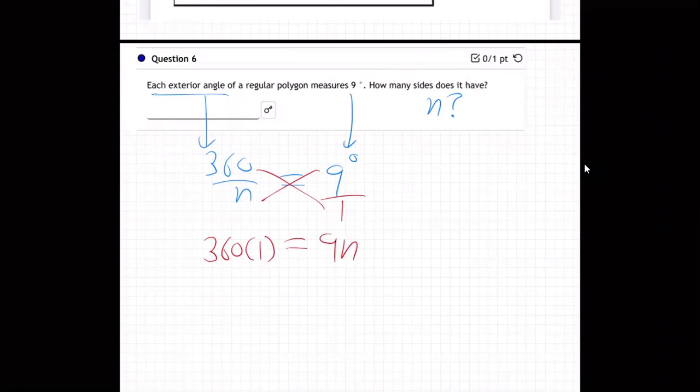Everybody see what I did there? Just put it over one and then diagonal those two, diagonal those two. And then 360 times one is just 360.